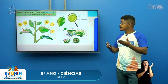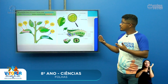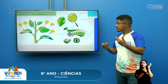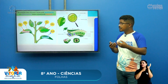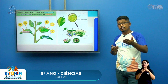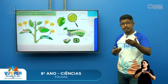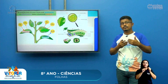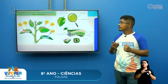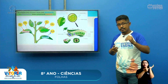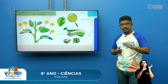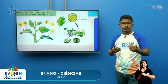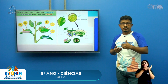Através da fotossíntese, a planta absorve o gás carbônico e libera o oxigênio, produzindo energia para si. Também, na ausência da luz solar, as plantas realizam a respiração, em que ocorre o inverso: elas absorvem o oxigênio e liberam o gás carbônico. Além disso, a planta também perde água pelas suas folhas através da transpiração.